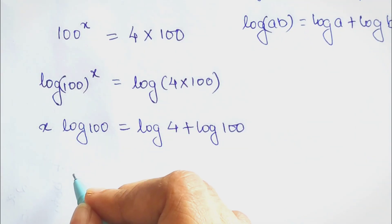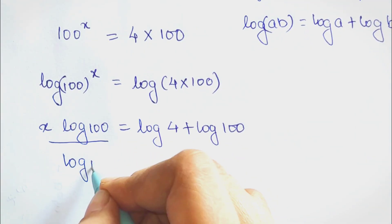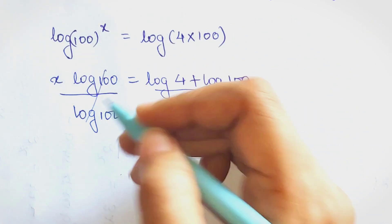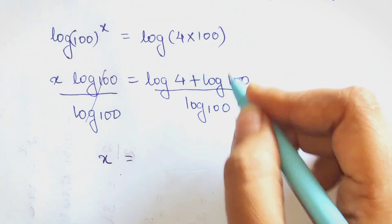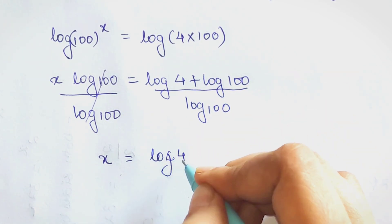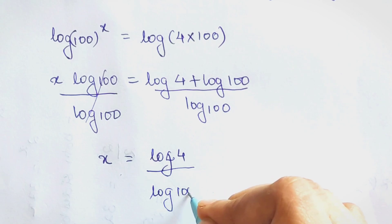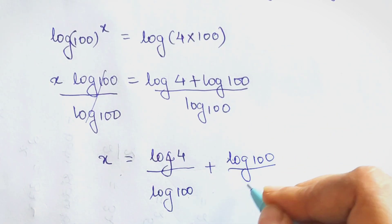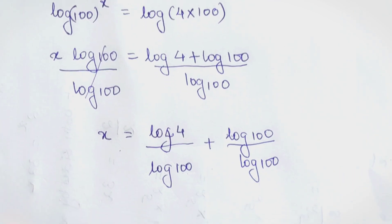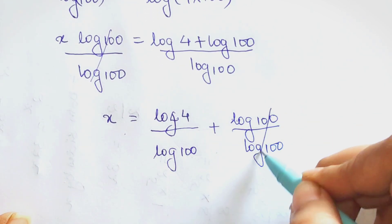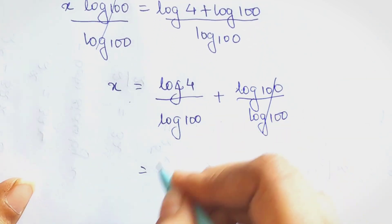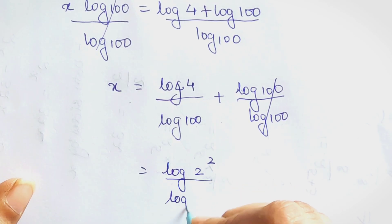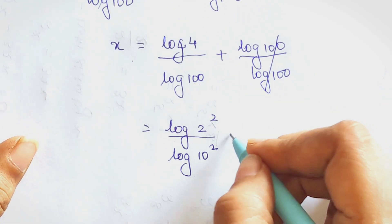We divide both sides by log 100 in order to find the value of x. This cancels, and we get the value of x as 1. We split and write log 4 upon log 100 plus log 100 upon log 100. This cancels, and log 4 is nothing but log 2 squared upon log 100, which is log 10 squared, plus 1.